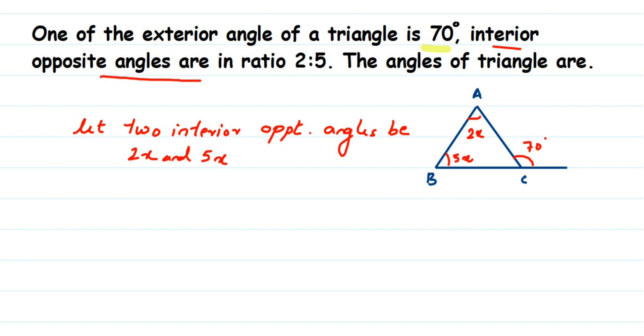the property of the triangle that the exterior angle of triangle will be equal to sum of two interior opposite angles. That is the 70 will be equal to sum of angle A and angle B.